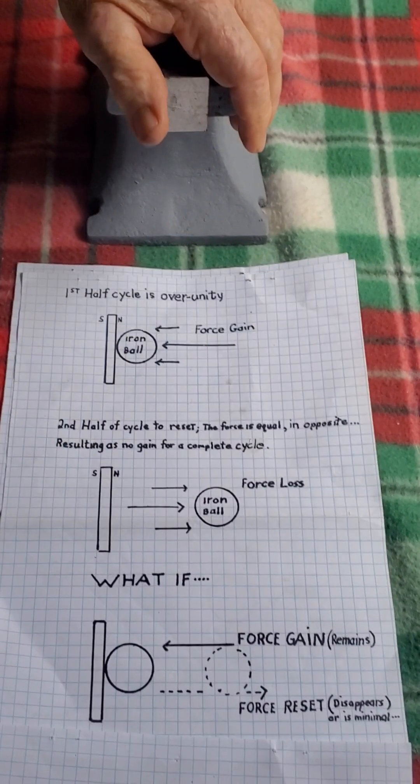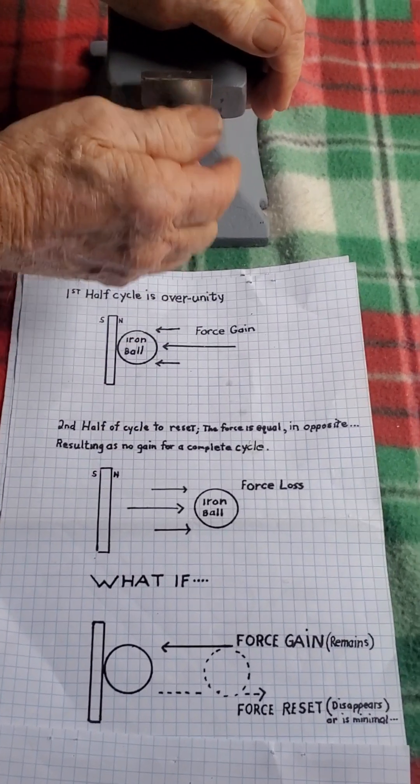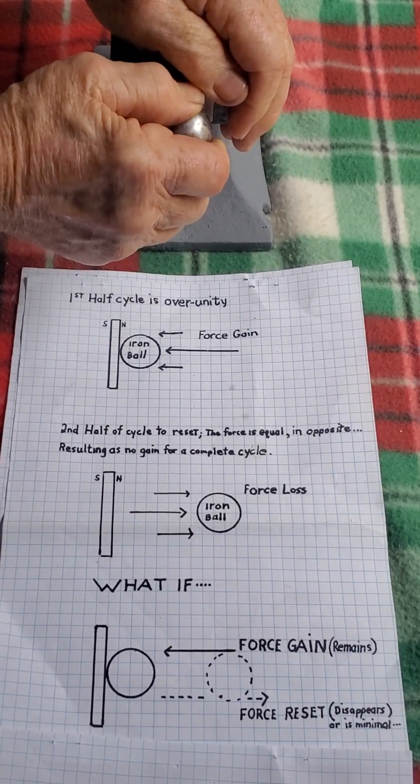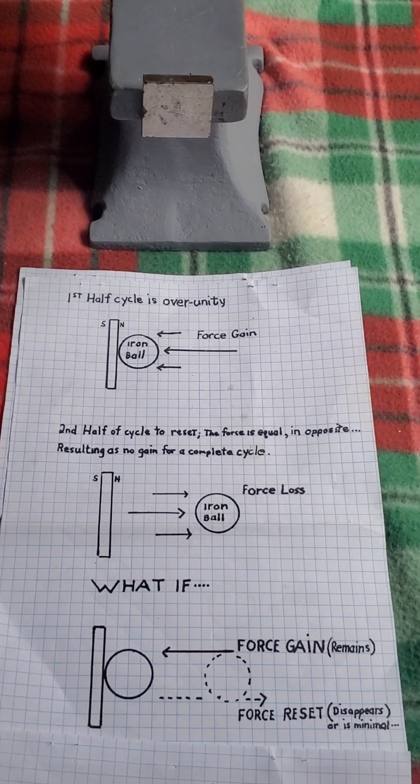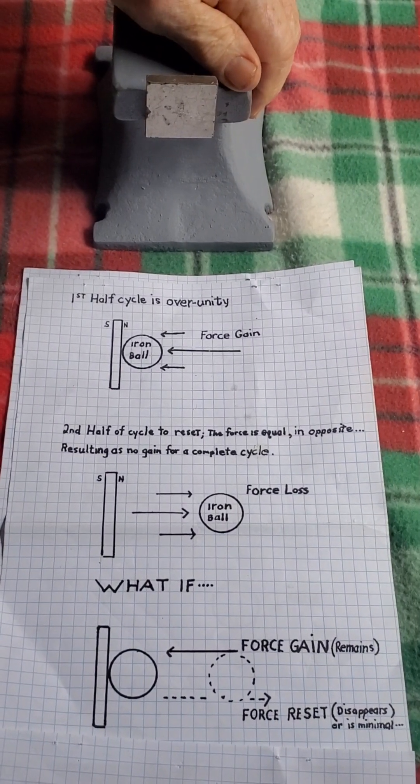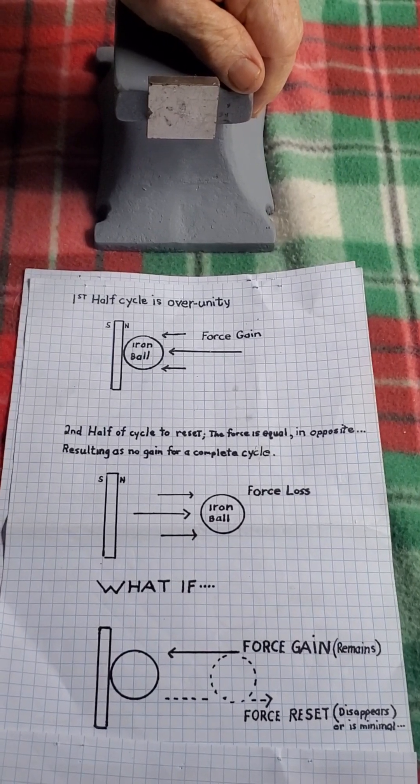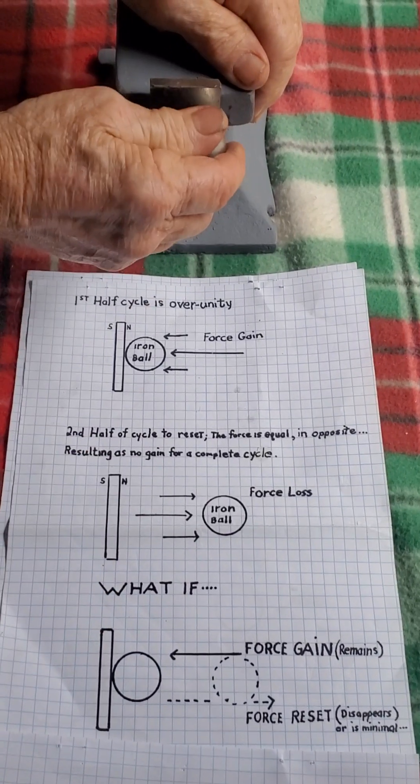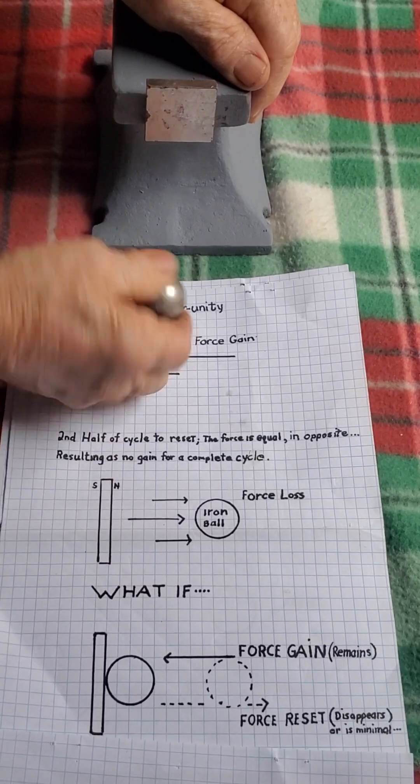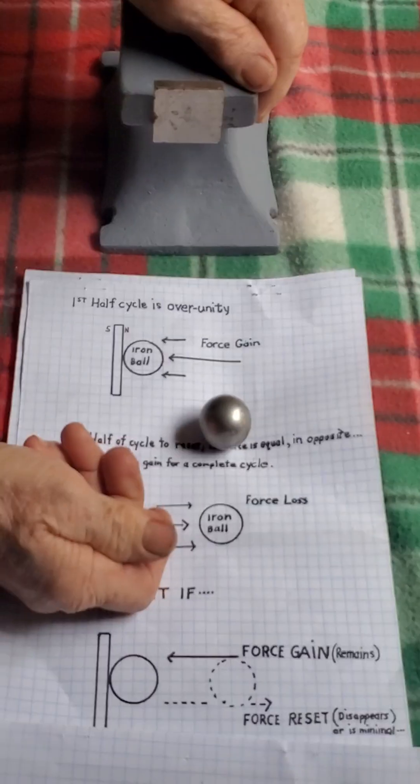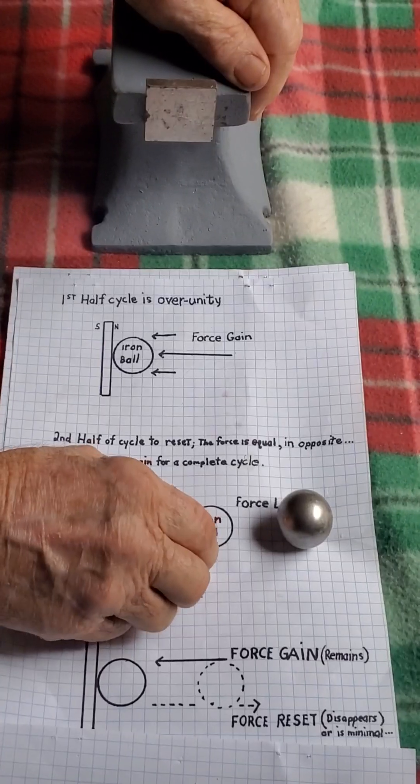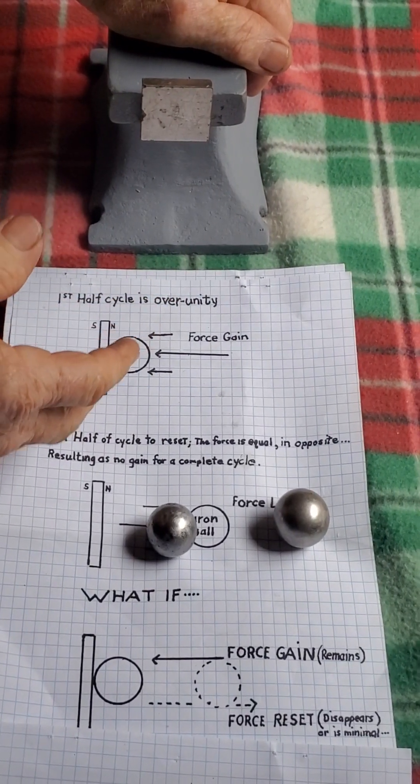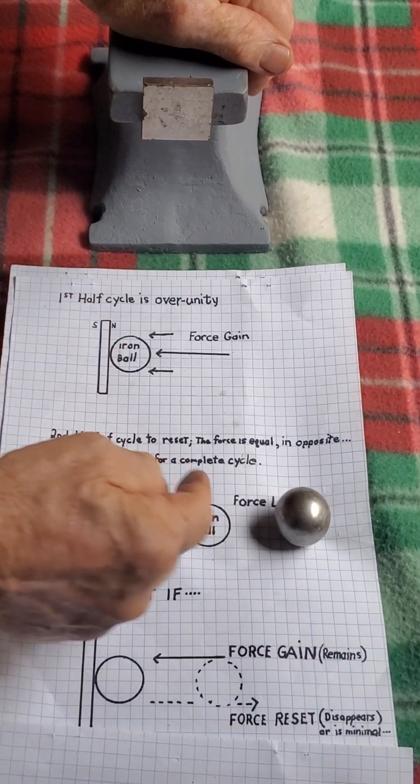Now, how am I doing that? What's going on? This is to show what an over-unity event should look like if you're making one or working toward one. I just have another ball. This is non-magnetic. The other one is magnetic. This is showing the principle behind what you want to work towards. You want to have a force gain, but no force loss.